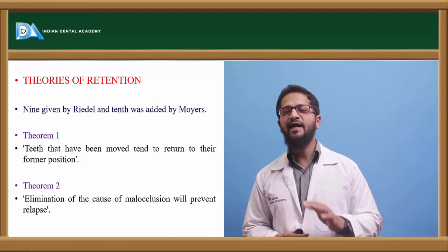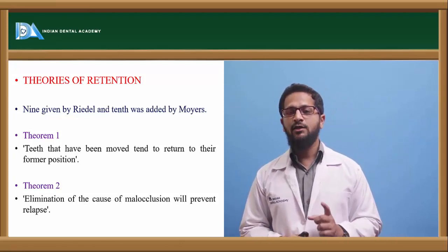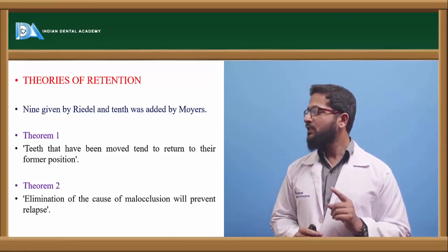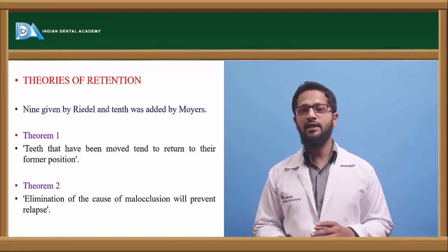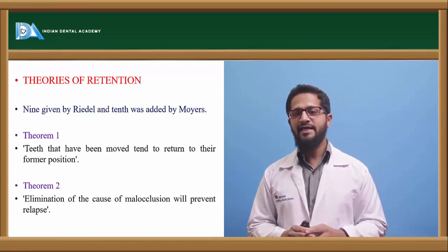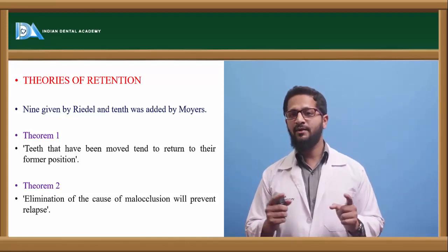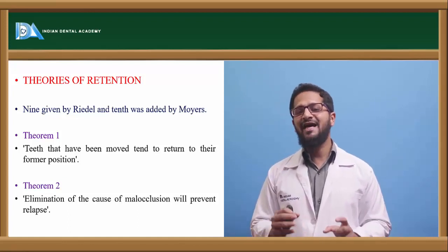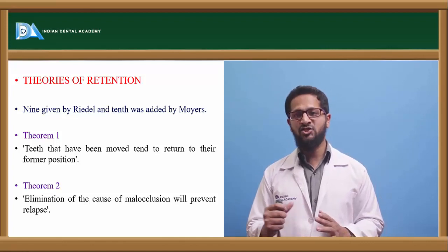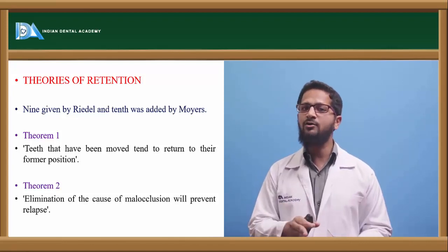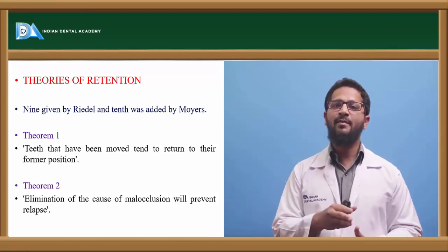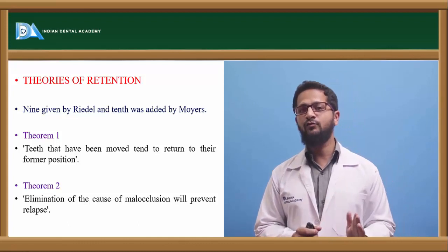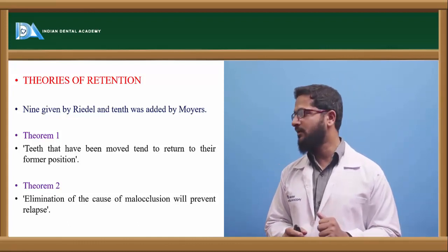Theories of retention were given by Riedel, with a tenth theorem added by Moyer, giving a total of ten theories. The first theorem states that teeth that have been recently moved tend to return to their former position, due to the elastic nature of the surrounding fibers. The second theorem states that elimination of the cause of malocclusion will prevent occurrence of relapse — the etiological factor must be identified and corrected first.